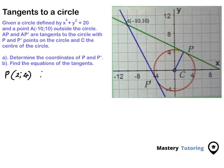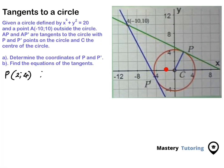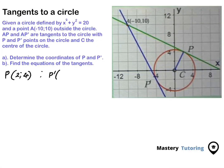Now for the coordinates of P', there are two ways we can get these coordinates. The first one is to read them directly from the diagram. The x-coordinate is going to be 4 units to the left, so negative 4, and then the y-coordinate is 2 units down, so negative 2. This gives us P' = (-4, -2).